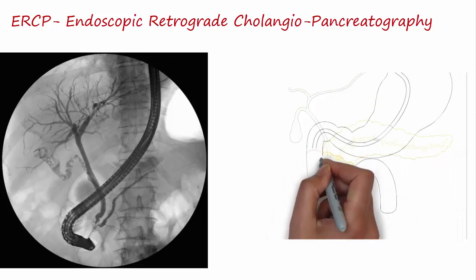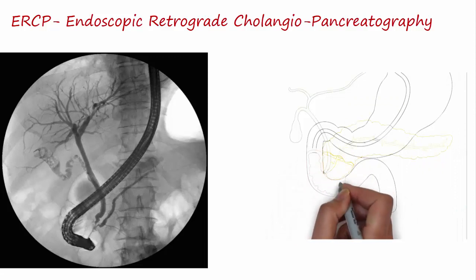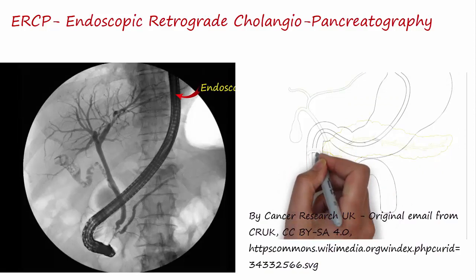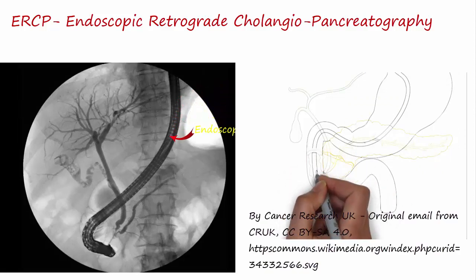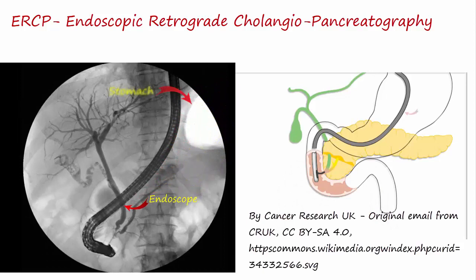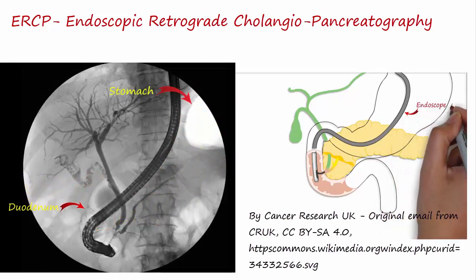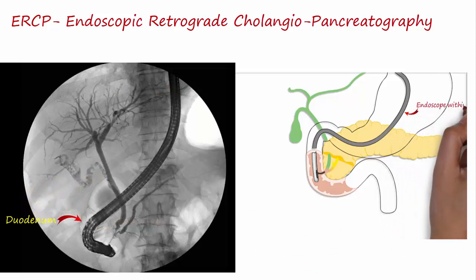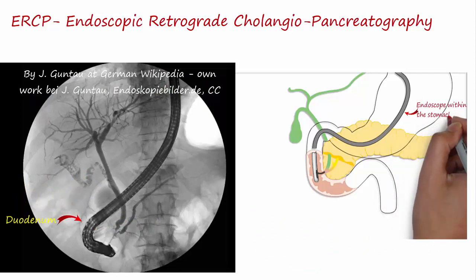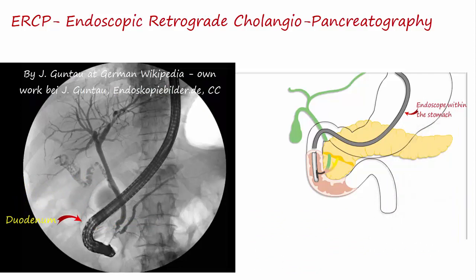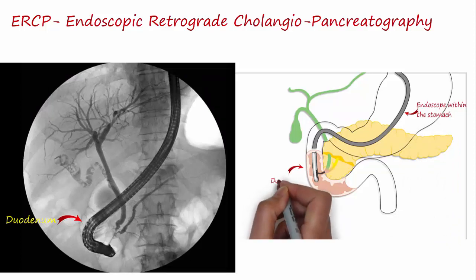It involves a specially designed instrument known as an endoscope, which is visible here in this image. The endoscope is inserted through the mouth, into the stomach, and then into the duodenum. ERCP combines the use of endoscopy and x-rays to diagnose or treat certain conditions of the biliary and pancreatic ductal system.